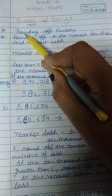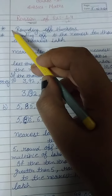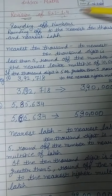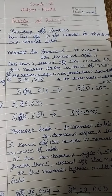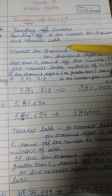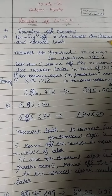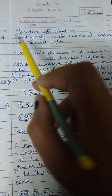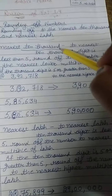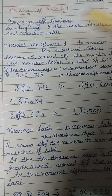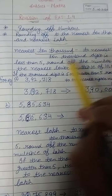Exercise 1.4 is related to the rounding of numbers. We will do the revision of rounding off to the nearest 10,000 and the nearest lakh. Firstly, we will discuss the nearest 10,000.